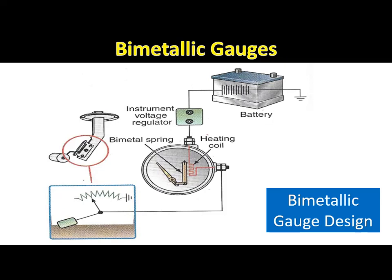The gauge sending unit contains a variable resistor that controls the current flow through the heating coil. Bimetallic gauges require voltage limiters in their circuits to operate properly — almost all of this type operate on five volts. Bimetallic gauges were most commonly used as fuel and temperature gauges.